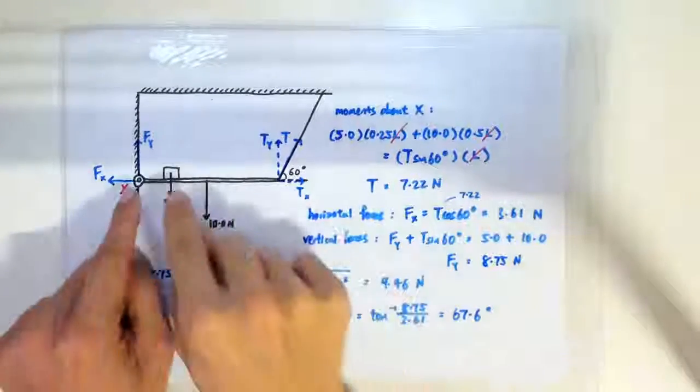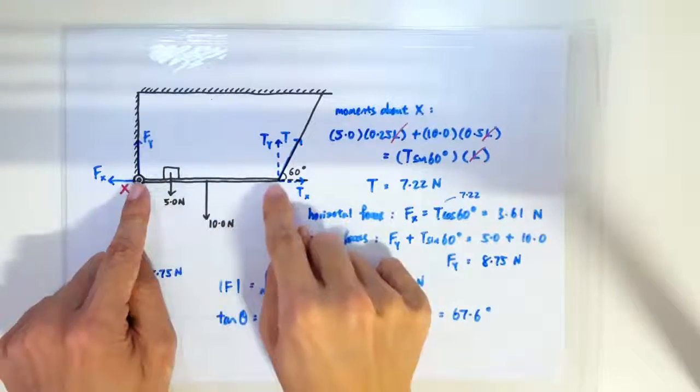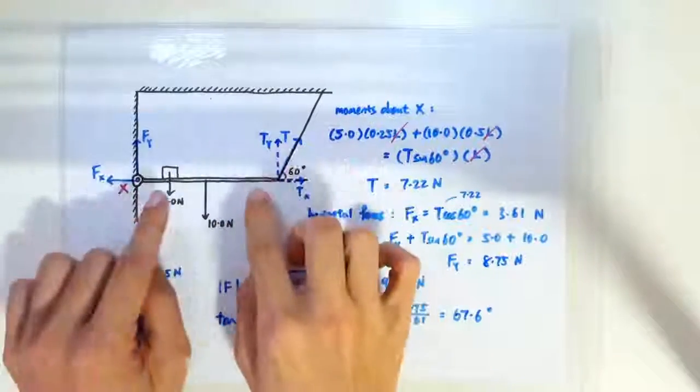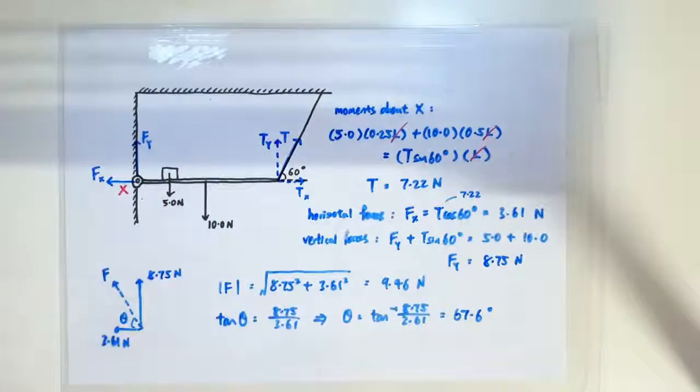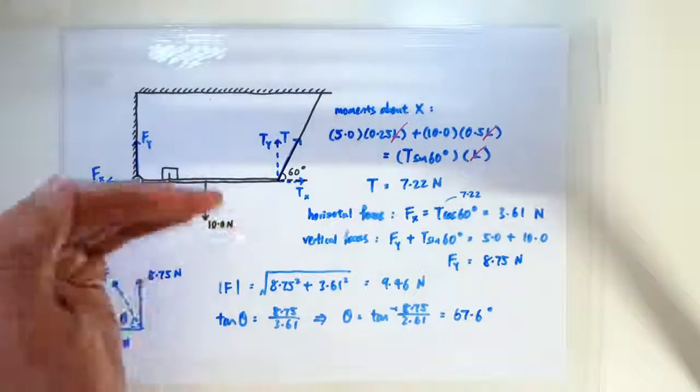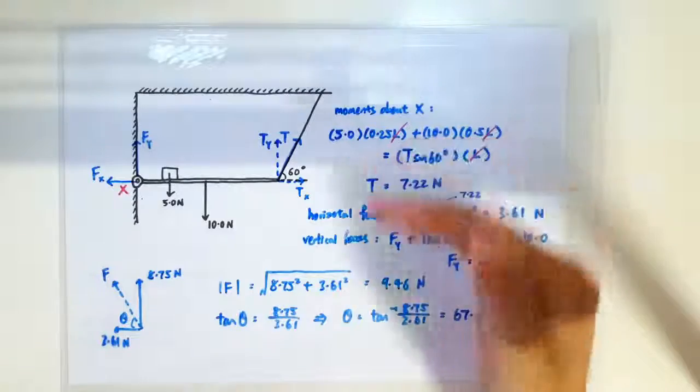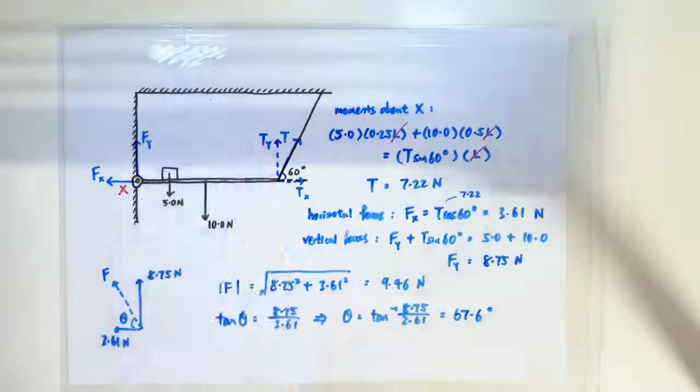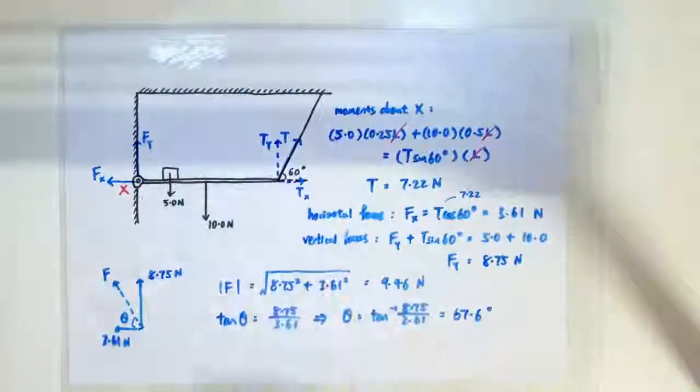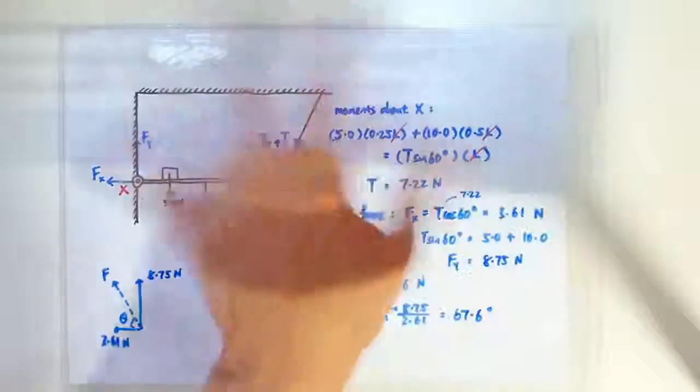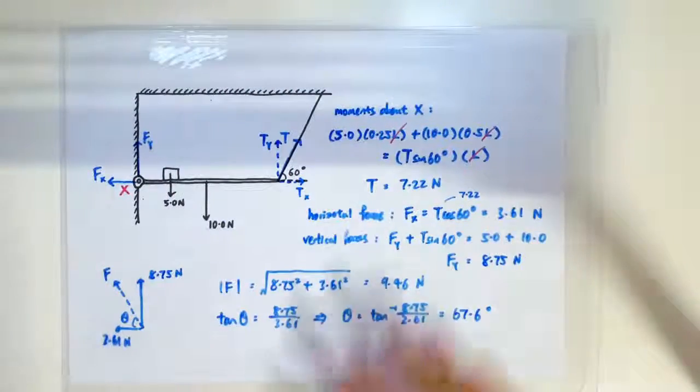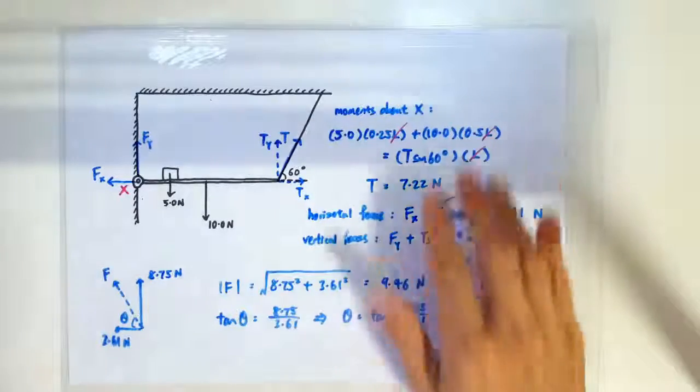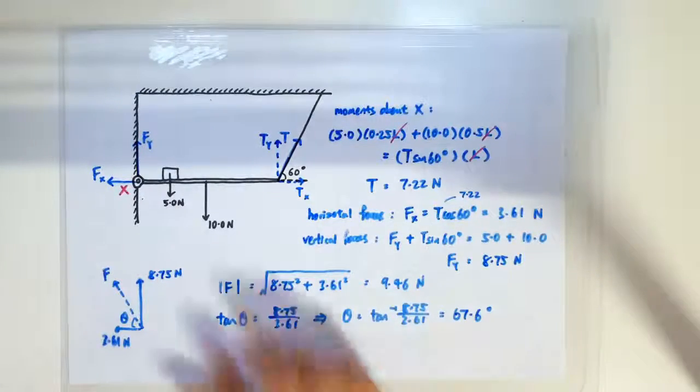So basically, when an object is at rest, we look at all the forces acting on the object, and we know that all the rights must balance all the lefts. All the ups must balance all the downs. And all the clockwise must balance all the anticlockwise. So form your equations out of all these facts, and you should be able to solve whatever unknown force you are supposed to solve for.